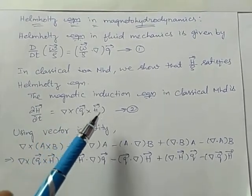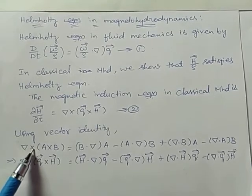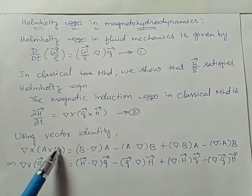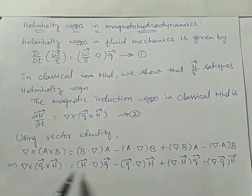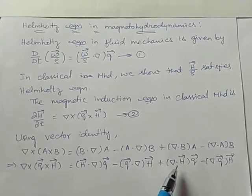To find del cross q cross H, I am considering a vector identity. In this vector identity, substitute a as q, b as H. Here, del dot H is zero because of solenoidal property.